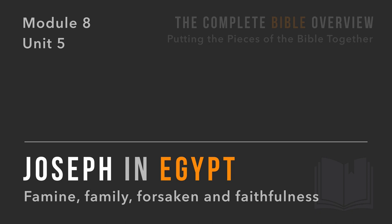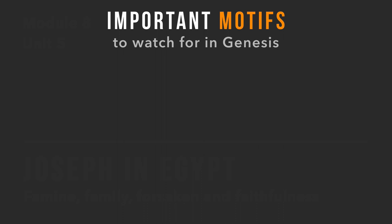Unit five: Joseph in Egypt. Famine, family, forsaken, and faithfulness — all these things are going to come into play as we see in the life of Joseph. We talked about important motifs to watch for in Genesis.